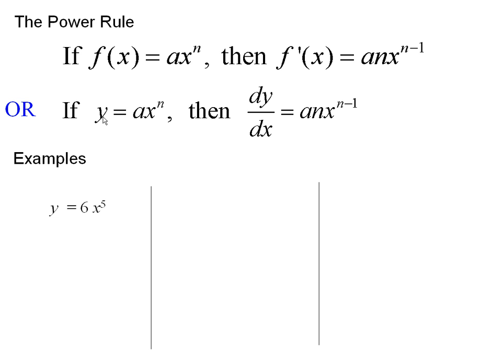Three more examples, this time using y and dy/dx. 6x to the 5 — it's just like the one we had before. 6 times 5, x to the 4. And 6 times 5 is 30.